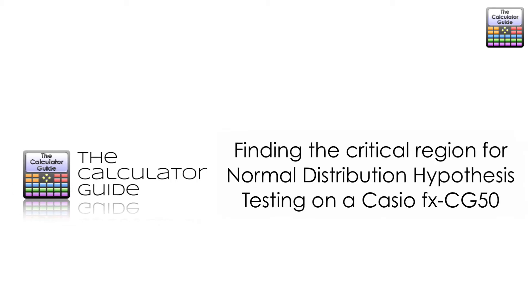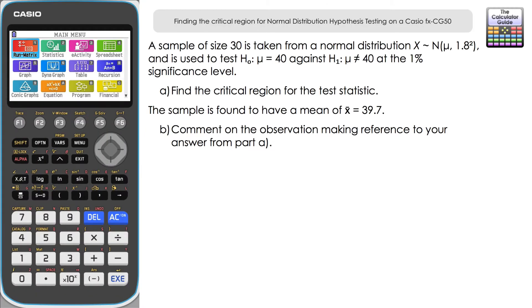Welcome to the Calculator Guy video on finding the critical region for normal distribution hypothesis testing on a Casio FX-CG50. For the first question, a sample of size 30 is taken from a normal distribution with mean μ and variance 1.8². The hypothesis test has a null hypothesis H₀: μ = 40 against H₁: μ ≠ 40, tested at the 1% significance level.